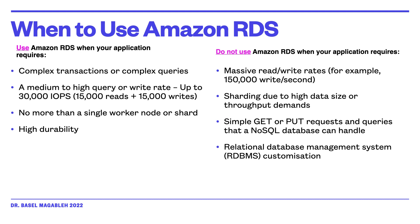You don't use Amazon RDS when your application requires massive read/write rates — for example, 150,000 writes per second — when sharding is mandatory and you need your own sharding technique, when you need simple GET or PUT requests with a NoSQL database, or when you require a highly customized version of a database engine that you need to install yourself.